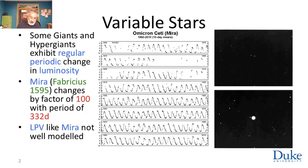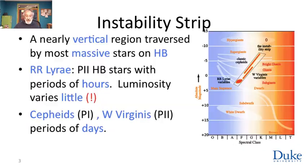The long period of 332 days and the luminosity make Mira something called a long-period variable. The physics and modeling of these variable stars is difficult, and Mira is the best known variable star, but not the best understood one. I want to talk about the ones that we understand better, and those are located in something called the instability strip.